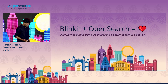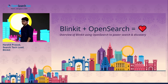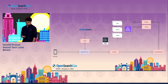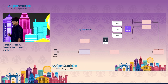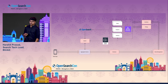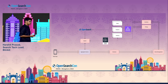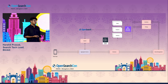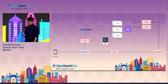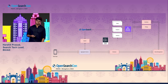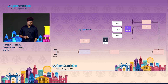Let me give an overview of the high-level architecture of how Blinket is working. When a customer comes on our Blinket app, it makes a request to our aggregator service. The aggregator service is basically responsible for aggregating different kinds of data and showing it on the app. Search is also one of the external services which is part of the aggregator service.